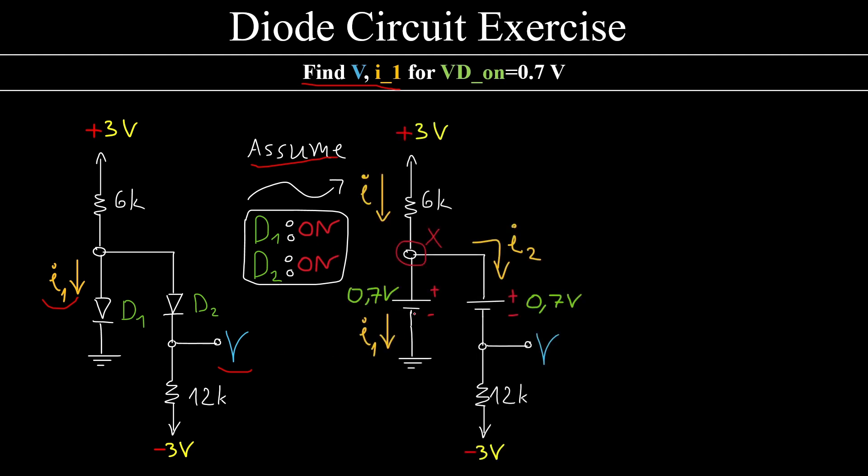When both of the diodes are on, they can be represented by a voltage source of 0.7V, since this is the one given by the exercise.